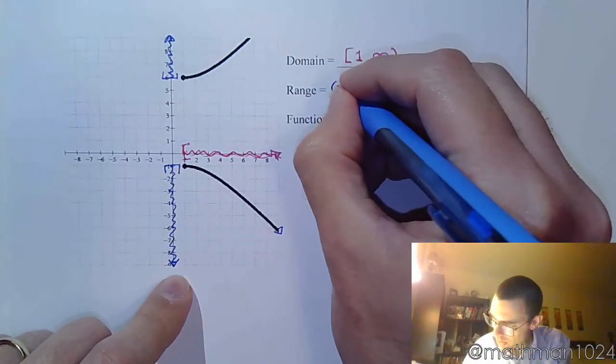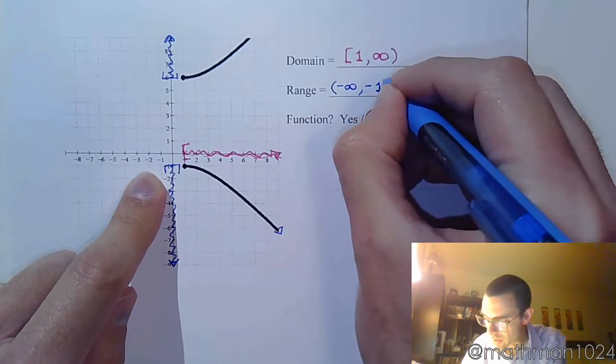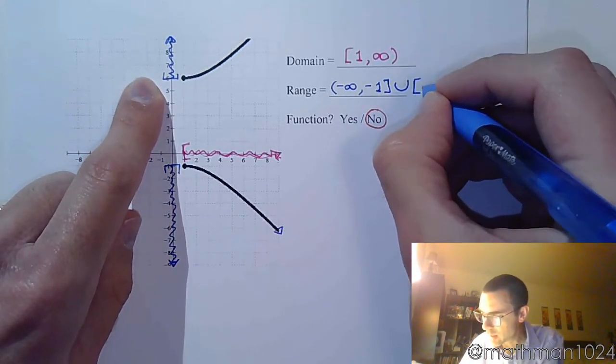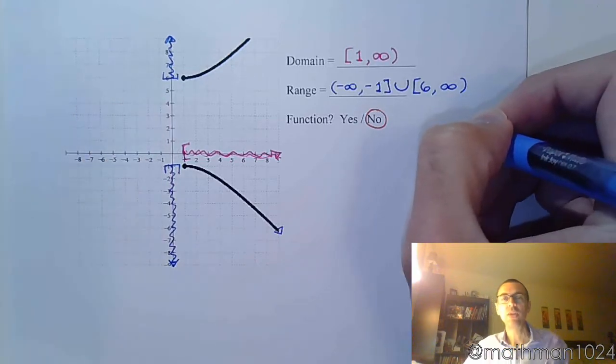So let's describe this range. Let's describe what we've highlighted on that y-axis. This guy is coming from negative infinity. He goes all the way up to negative 1. But then he has to stop. So it's union.